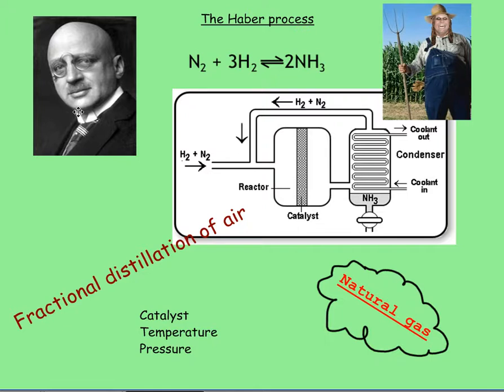Now, there's a foundation tier and a higher tier to this. This is the foundation tier. Now, this is the equation: we've got nitrogen gas plus three hydrogen gases makes ammonia. And this symbol here you'll recognize is reversible. If you don't, go and watch the one on reversible reactions before you start. So, it goes in both ways.